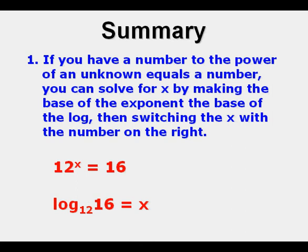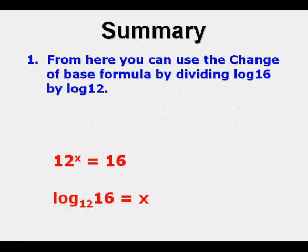So to summarize, if you have a number to the power of an unknown equals a number, you can solve for x by making the base of the exponent the base of the log, then switching the x with that number on the right. From here you can use the change of base formula by dividing log 16 by log 12.